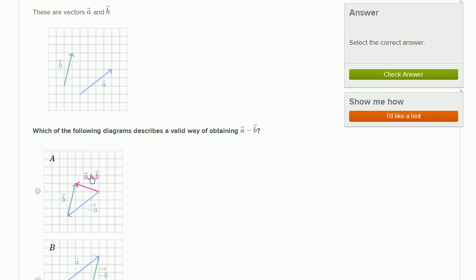But this one right over here, if we ignore what they wrote, what they've done is they've added negative a to b. So this is the negative of vector a plus vector b, or we could think of it as vector b minus vector a.